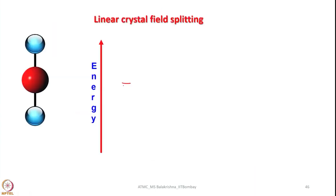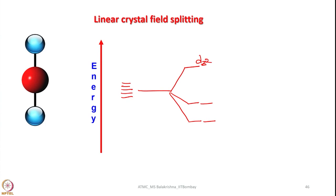Now let us write the relative energies of d orbitals under the influence of a linear crystal field. Obviously d_z² is highest in energy since the molecule lies along z and the 2 ligands approach directly along that direction. Next come d_xz and d_yz, and the least energetic ones are d_xy and d_x²-y². So this is the linear crystal field splitting — it is straightforward.